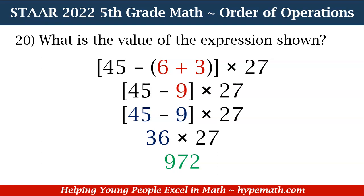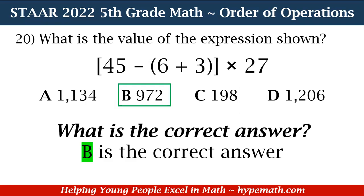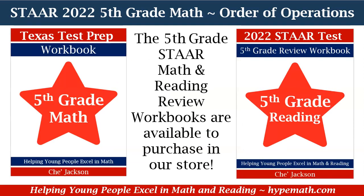So what is our correct answer? We need to find the answer choice that shows 972. If you said B, 972, you're absolutely correct. And that is it, 5th graders, for Order of Operations Part 2.